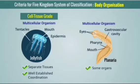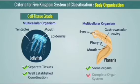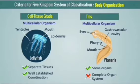Some multicellular organisms like Planaria have specific organs like eyes and mouth, but they do not contain a complete organ system. So it is called tissue-organ level of organization.